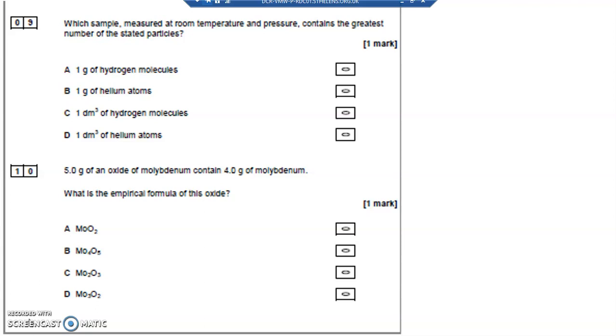So if I work out the number of moles, and every mole has the same number of particles, we can change the question around by saying therefore whichever one has the greatest number of moles will have the greatest number of particles. So let's work out the number of moles.